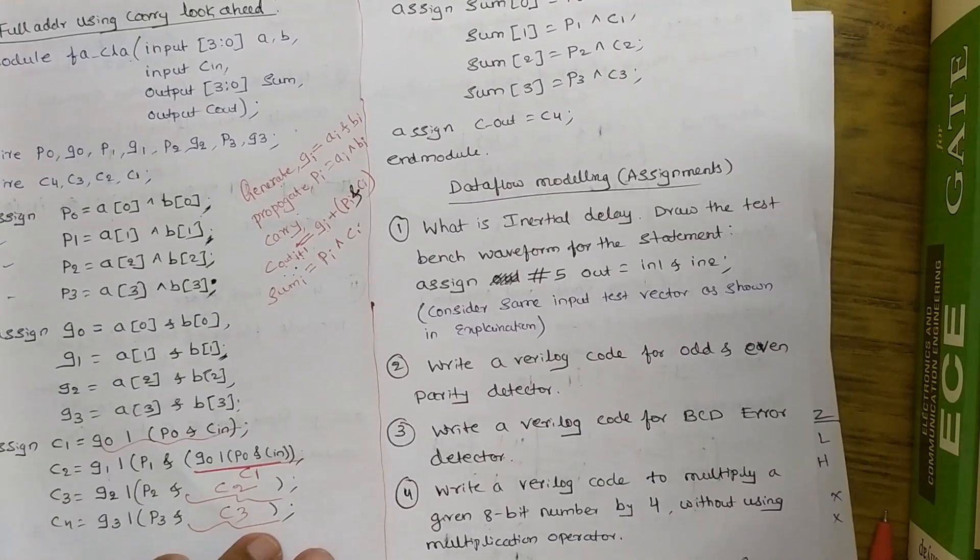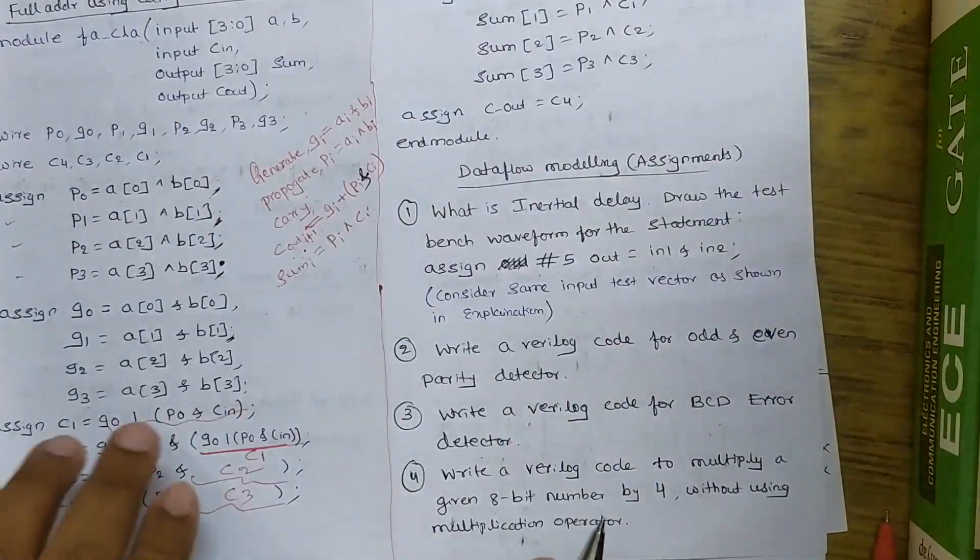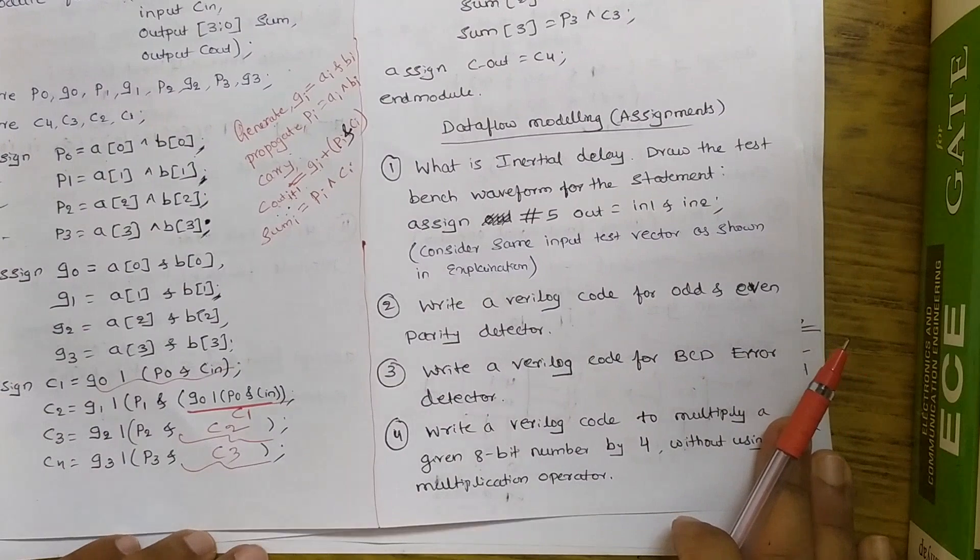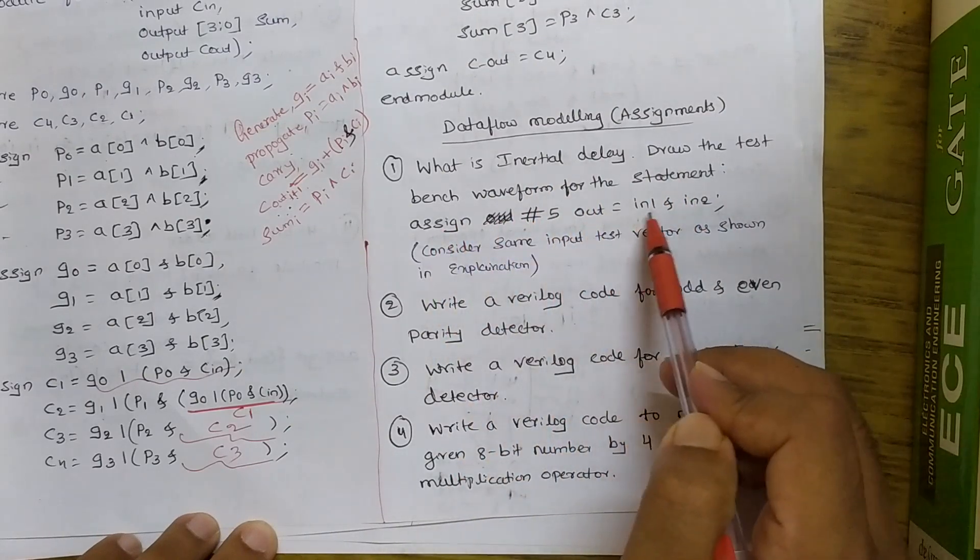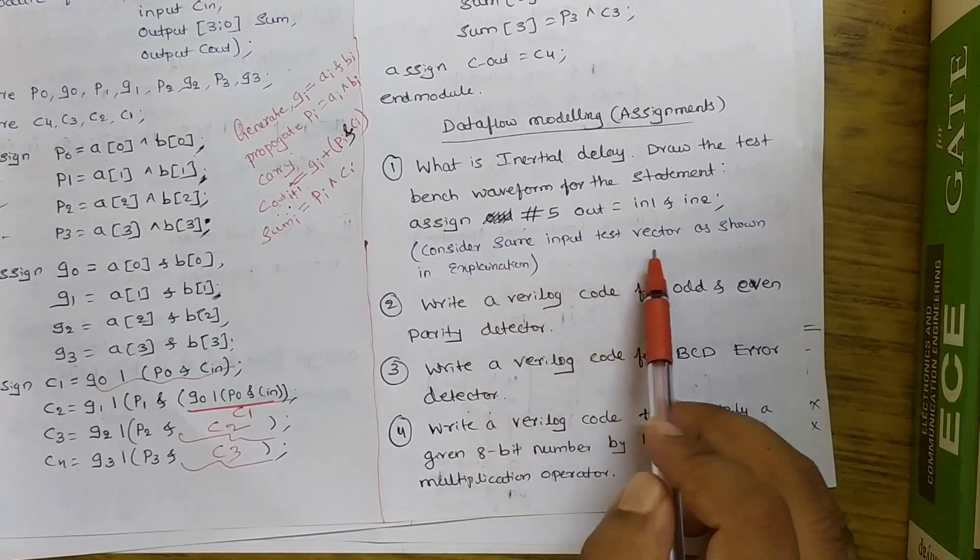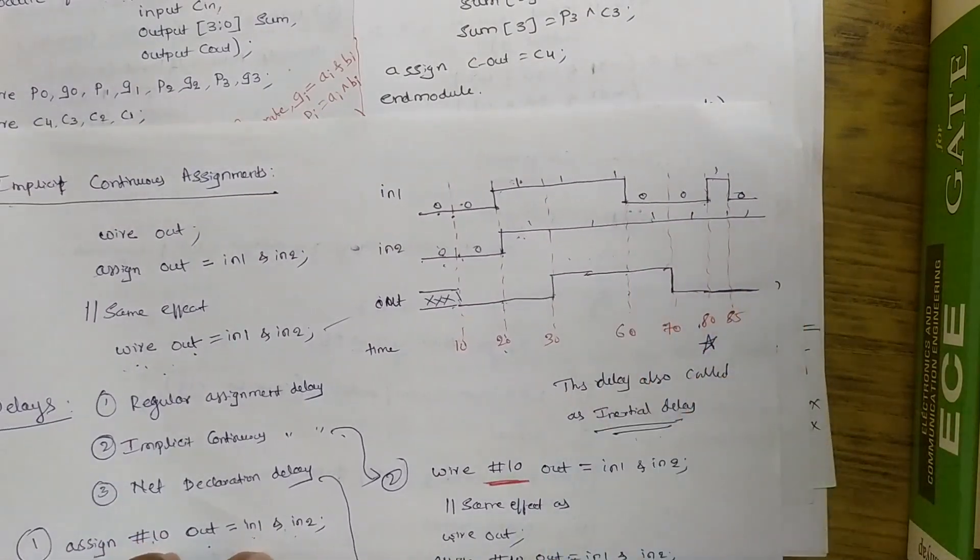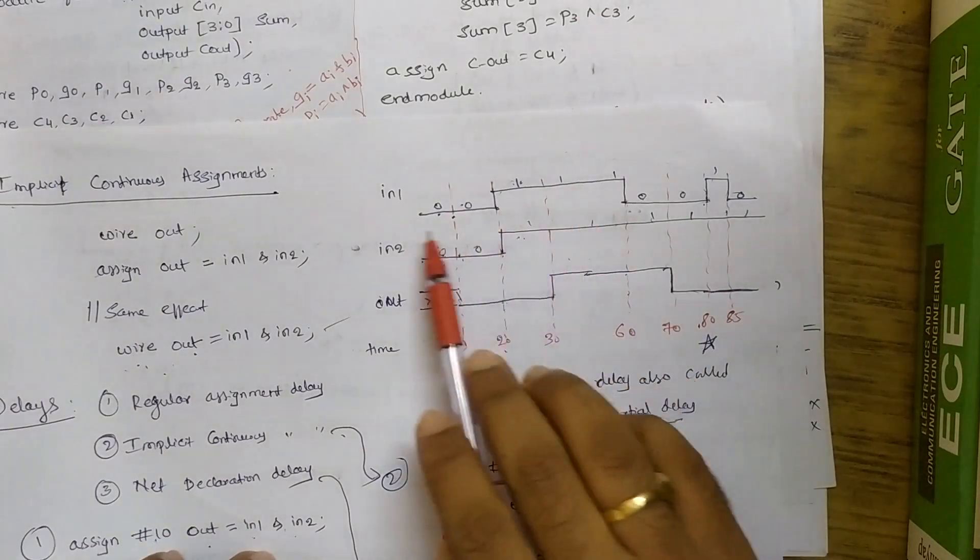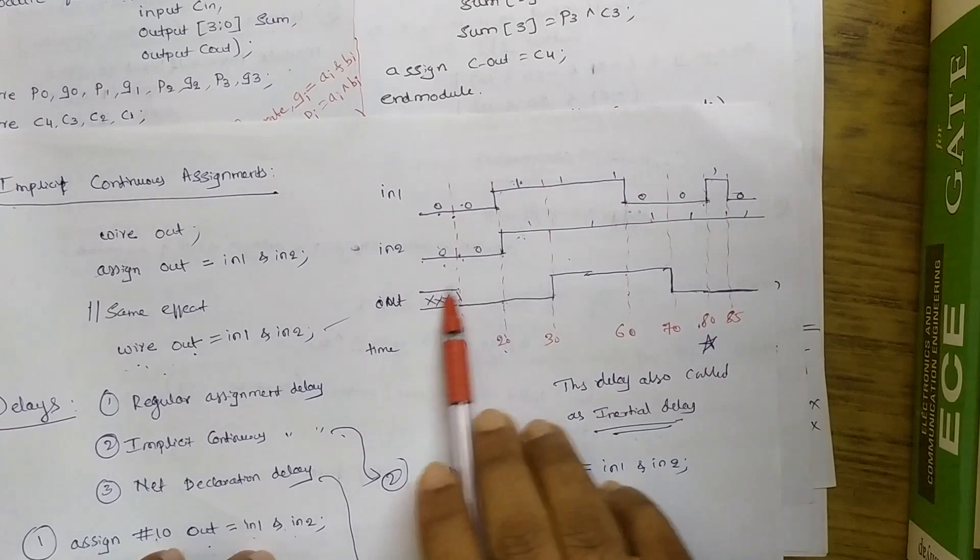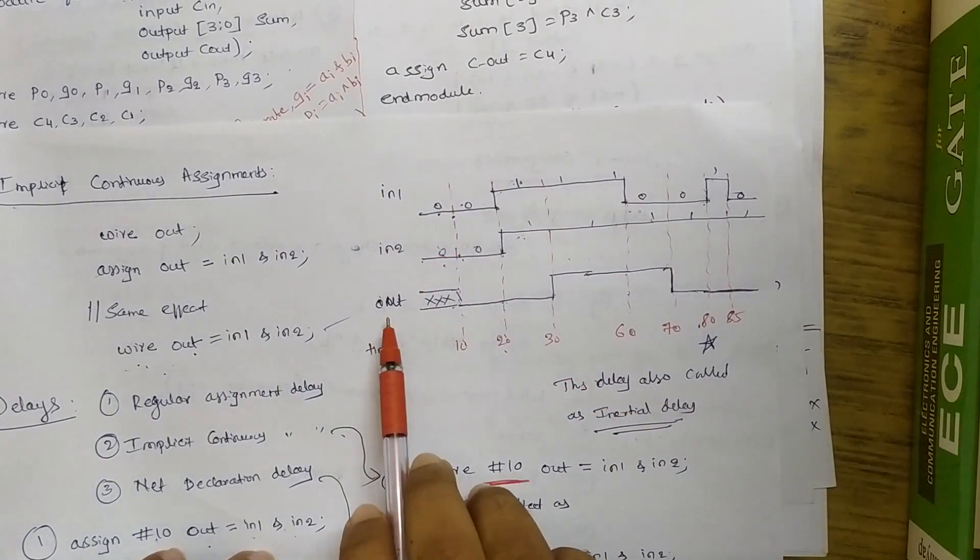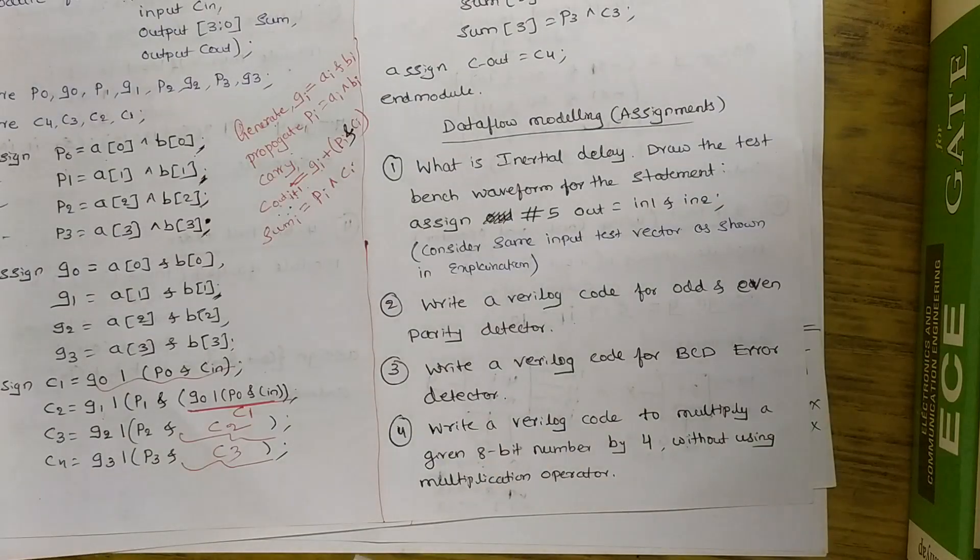Now here are some assignments for you. Just go through it. I'll give some hints. You can practice it. You can come up with answers. And if you have any queries you can comment on it. What is inertial delay? Draw the test bench waveform for the statement assign hash phi out is equal to Iin1 ANDed with Iin2. Consider the same input test vectors as shown in the explanation session. So I'll just keep that explanation session concept here. So here consider the same input case. Iin1 0 from 10 to 20 it is 0 and after that it will change over. Then it will remain at logic 1. Then it will come over here. Pulse width of 5. Same here. Same diagram. Iin1 Iin2 should be rated. Out for out you need to write the output expression, output test bench waveform by yourself. That's the first question.